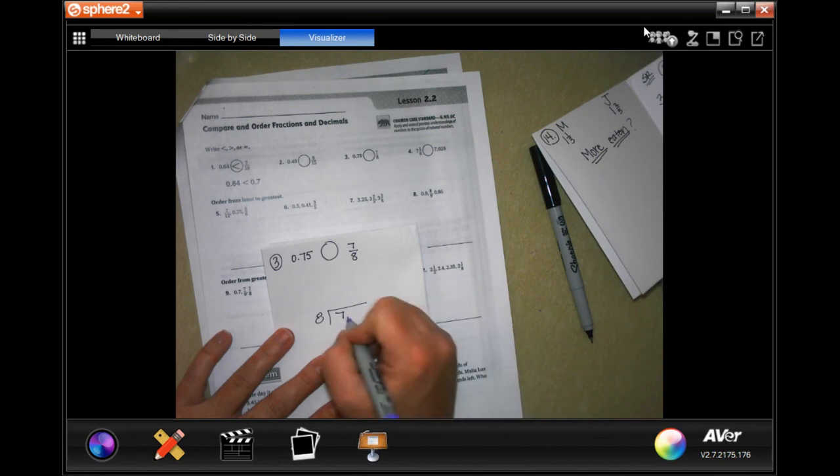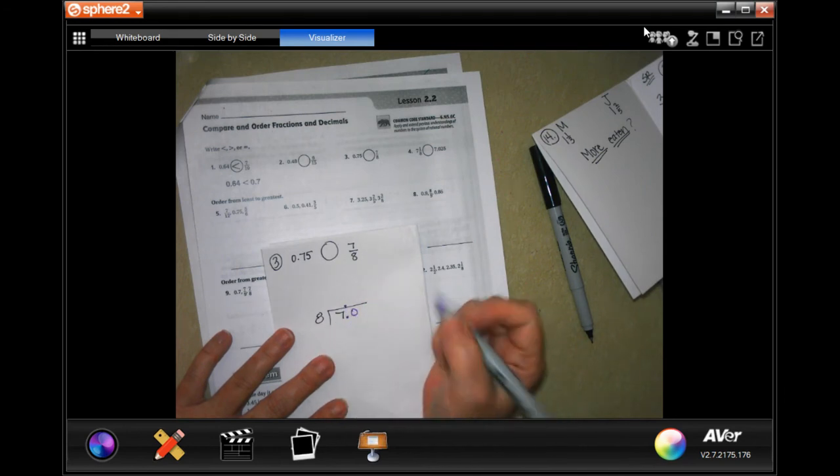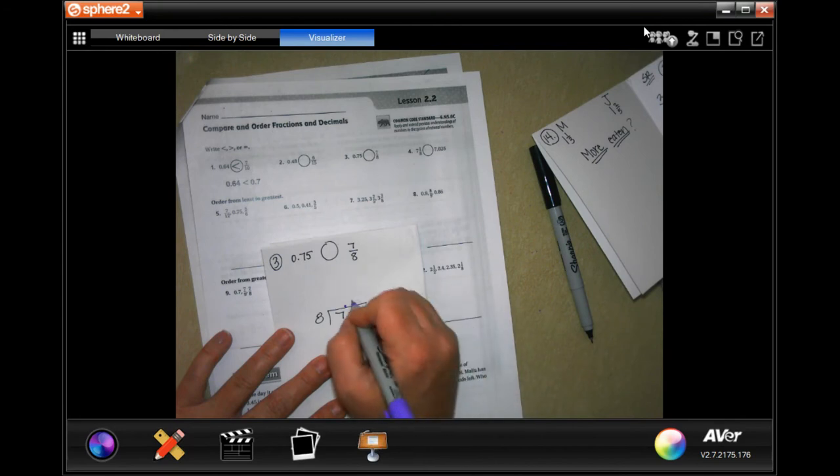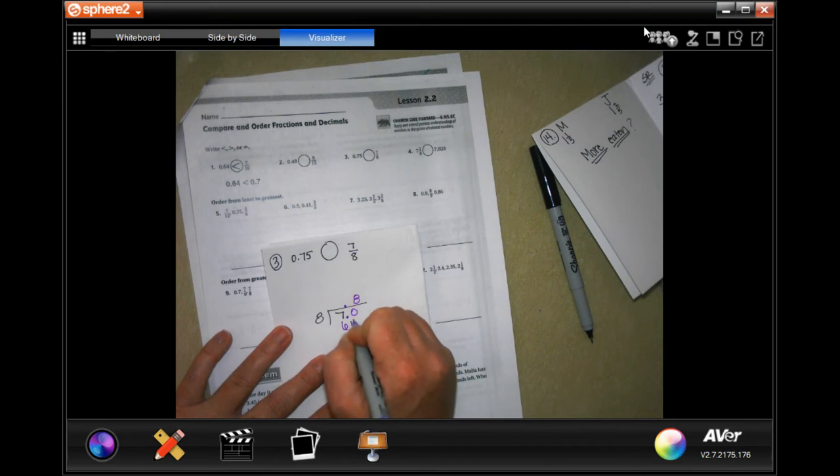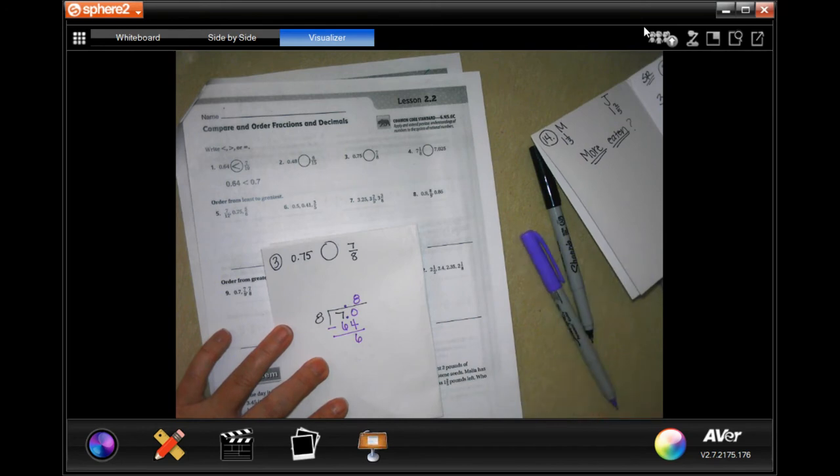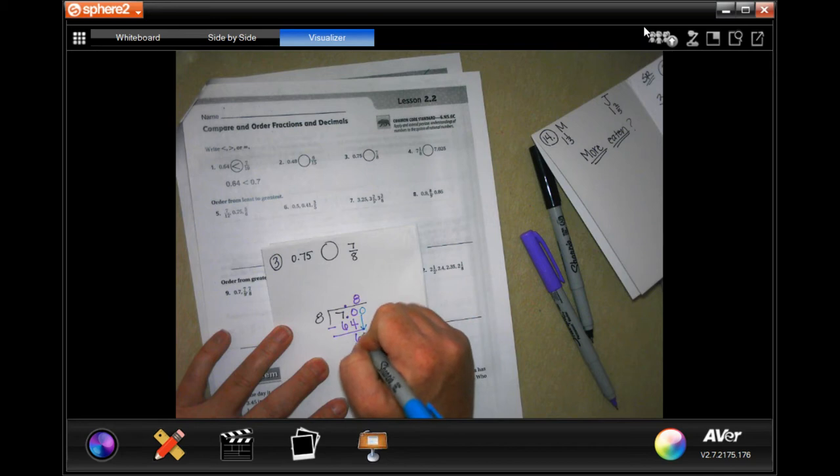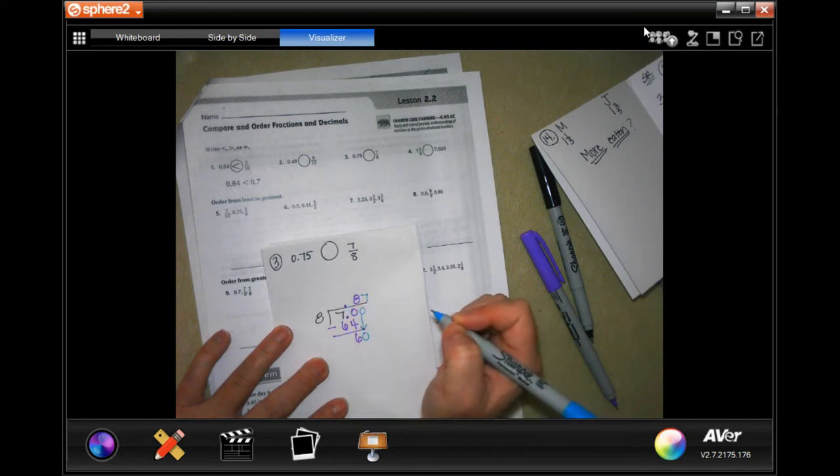8's not going to go into 7. So I'm going to put my decimal. I'm going to put a 0. 8 will go into 70 8 times, which is 64. When I subtract, I get 6. Now, 6 is smaller than 8, so I can add another 0, and I can bring that down. 8 into 60 is going to go 7 times. 7 times 8, 56.